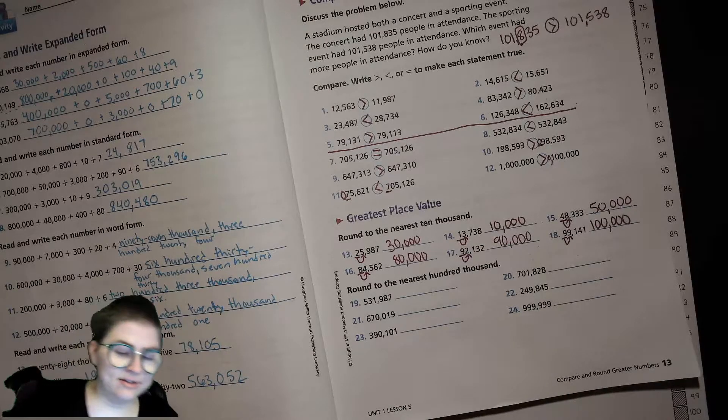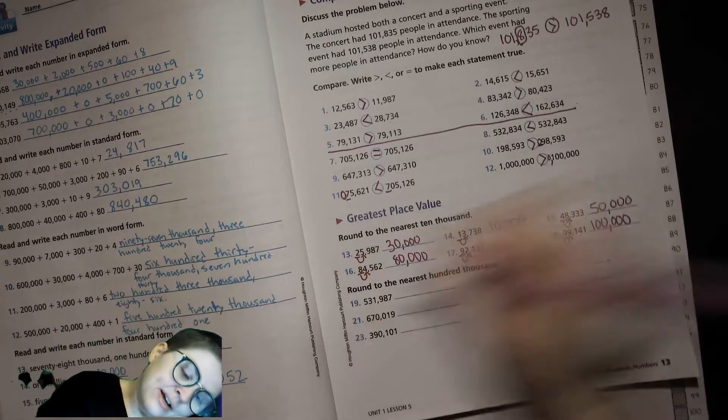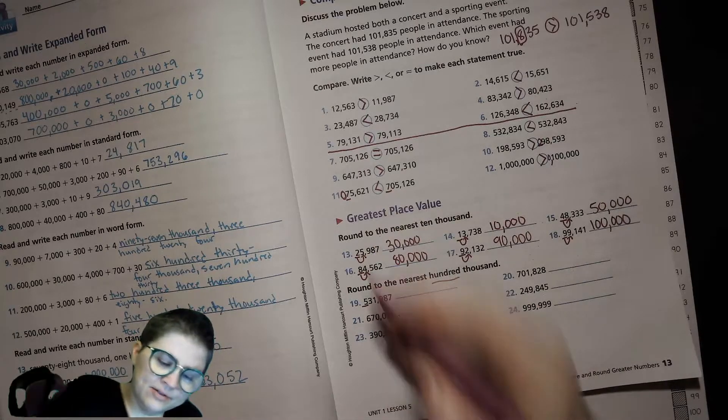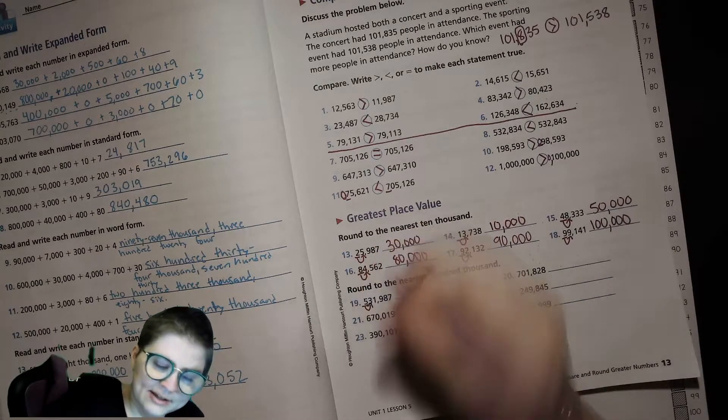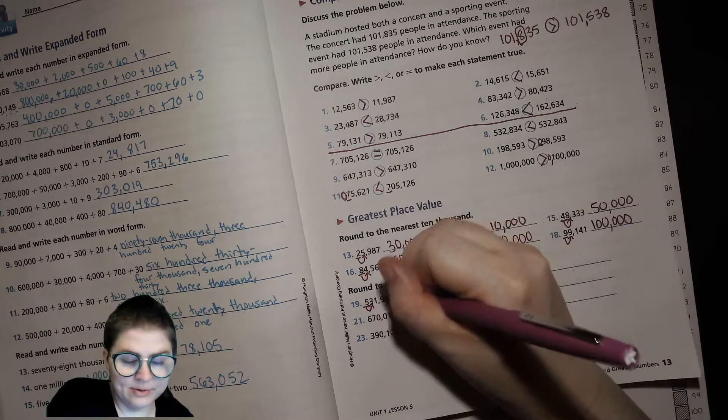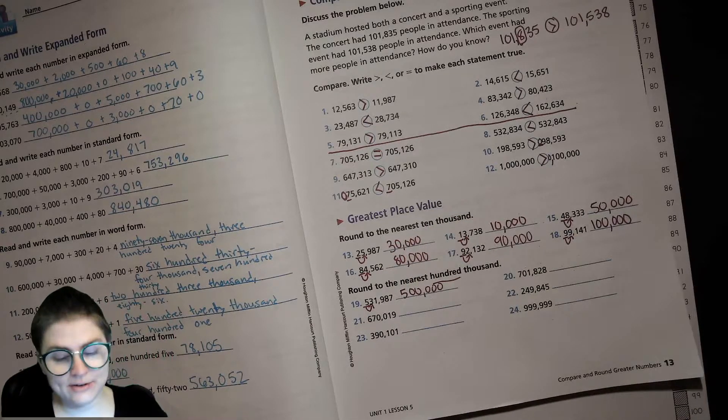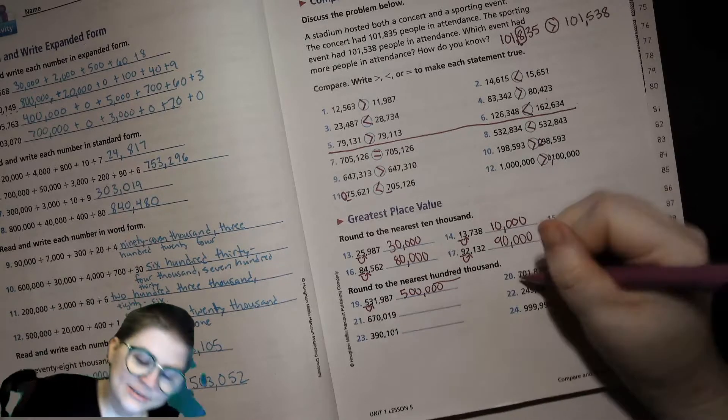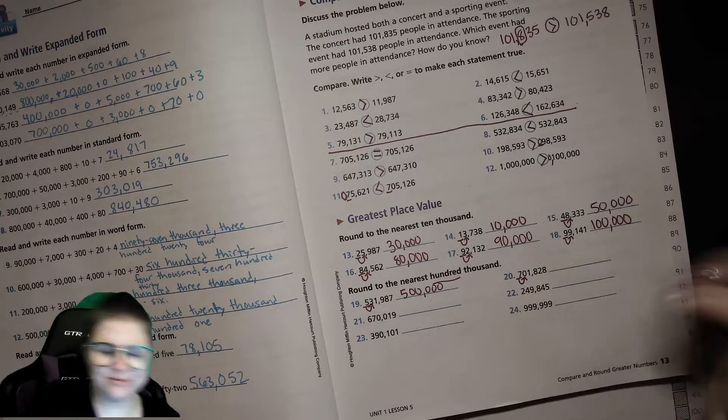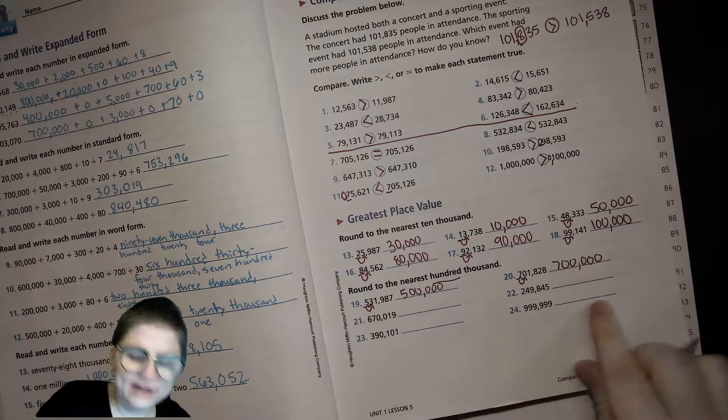So, we're going to do 100,000. So, we're going to do these two together and then I want you to try these ones on your own. Okay? If you can. So, the nearest 100,000. So, that's this place right over here. Our 100,000. Same thing. Looking at that. Looking over to the right. 4 or less. Let it rest. We're in between 500,000 and 600,000. So, it's resting at 500,000. This one right here. 7, 0. It's definitely less than 4. So, we're going to rest at the 700,000. You try these ones.